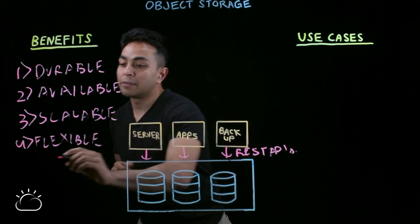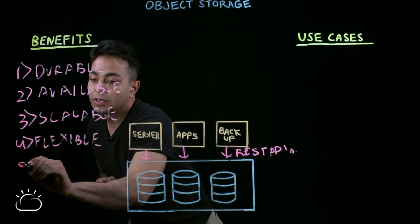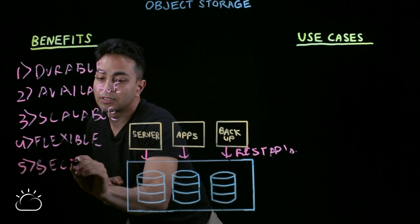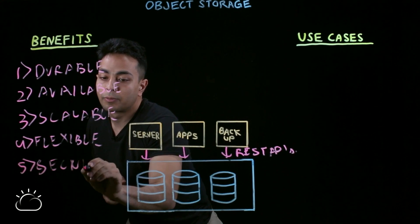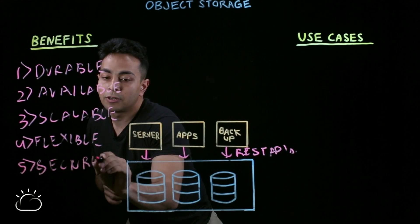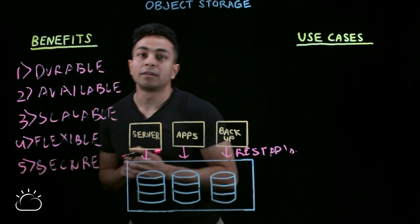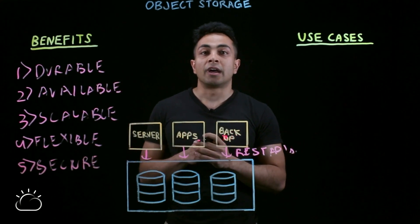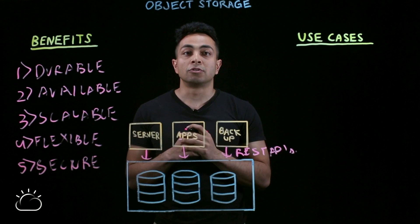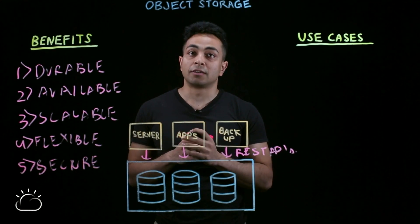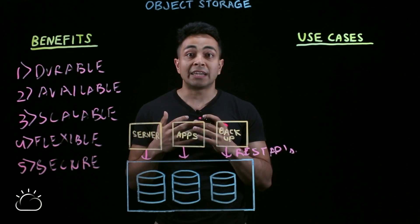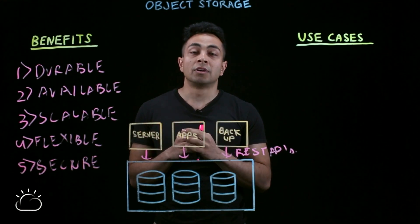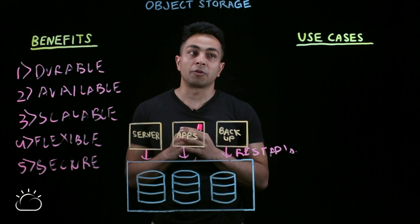The fifth and final benefit is security. Most object store systems provide you the ability to store data encrypted at rest and also allow you to encrypt the data while in transit, which means the data you're storing in object store is really secure.